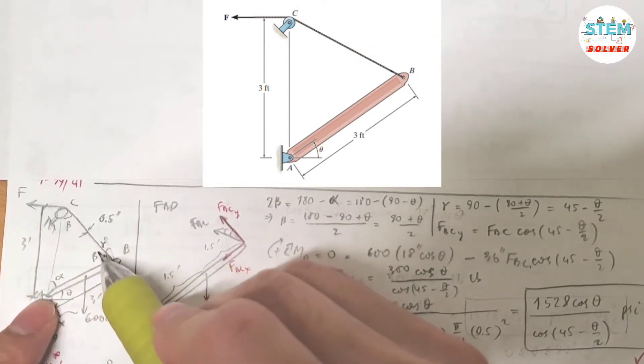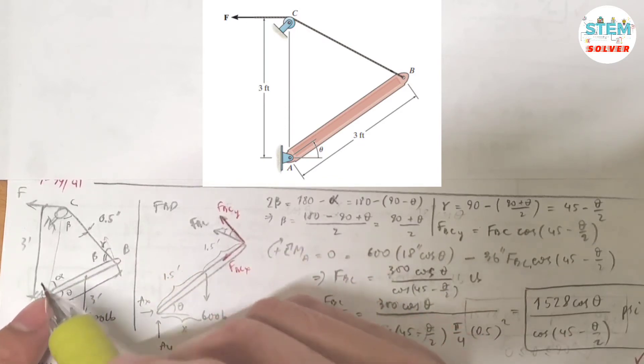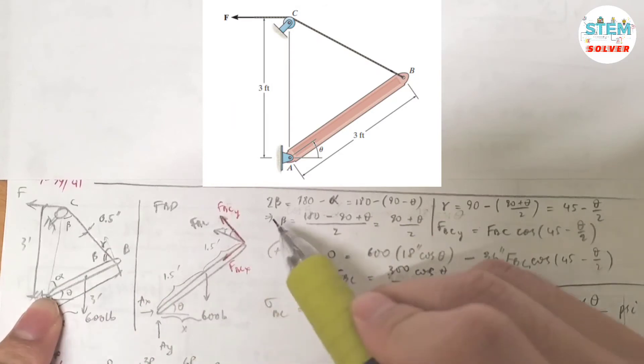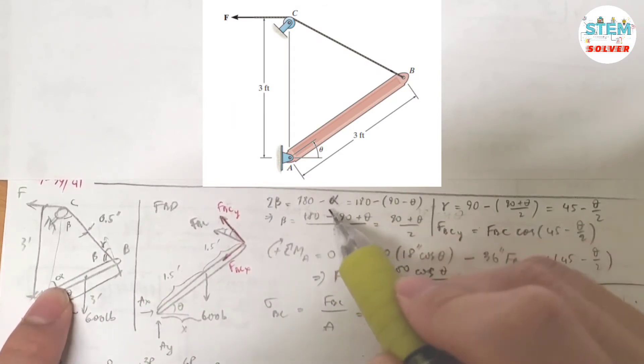Beta, beta. So you have 2 betas. And beta plus beta plus alpha equals 180 because this forms a triangle. So you have 2 beta equals 180 minus alpha. And alpha is equal to 90 minus theta.